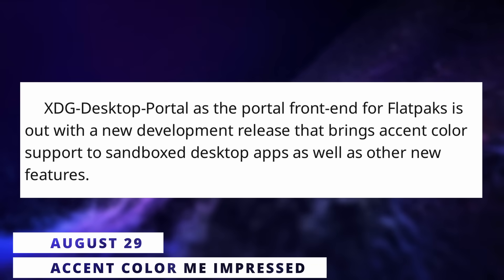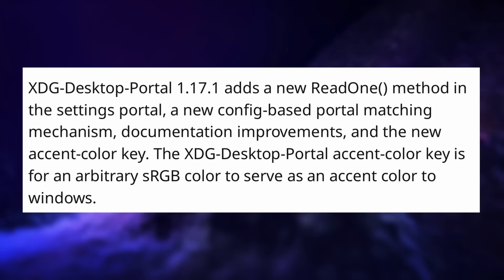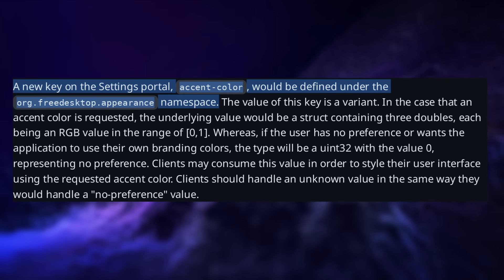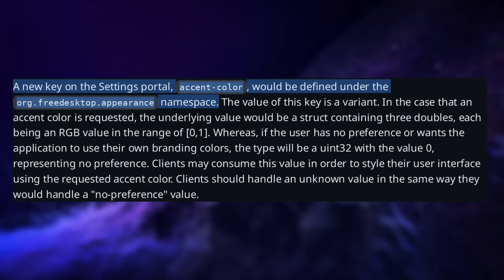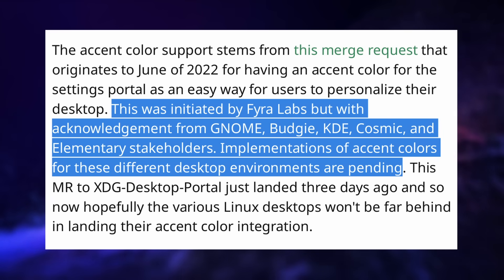Accent colors are now a standard on Linux, being added to the XDG set. With the latest update to the XDG desktop portal, accent colors are now available to every app that uses these portals, including Flatpak apps. The system sets an RGB value for the accent color in a new key, made available to any app through the portals so they can respect system settings. If no value is set, the app will use the default color for its toolkit. For now no desktop environment supports this yet, but since the merge request was acknowledged by GNOME, Budgie, KDE, Cosmic, and even elementary OS, we should see this happening pretty soon.